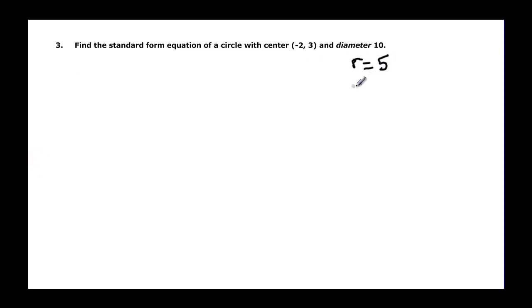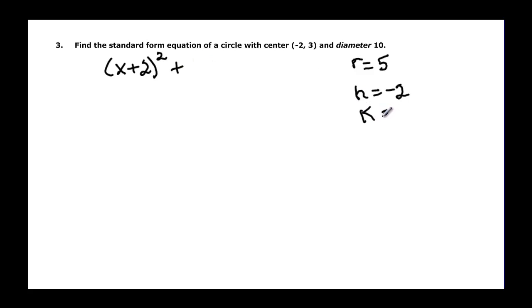Now find the standard form with center negative two, three and a diameter of ten. If the diameter is ten, the radius is half of that, which is five. So h is negative two, giving us x plus two, quantity squared — it's always the opposite sign. And k is three, giving us plus y minus three, quantity squared. Since r is five, r squared is twenty-five.